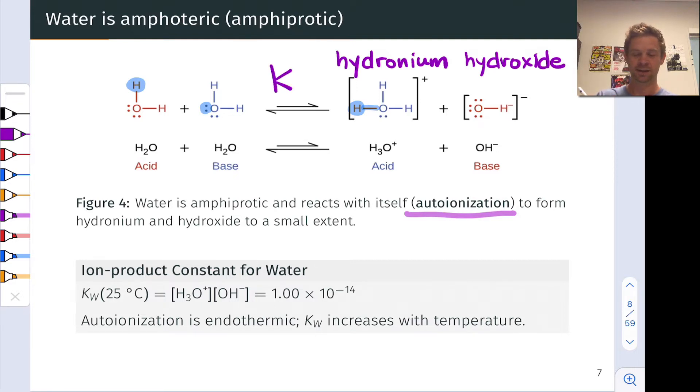We call it Kw, the equilibrium constant for the self-ionization of water. It has a value that's fairly famous, 1 times 10 to the negative 14th at 25 degrees Celsius. Based on what we understand about equilibrium expressions, the form of the equilibrium expression is H3O+ concentration times OH- concentration with nothing in the denominator, since all we have on the reactant side are pure liquids.